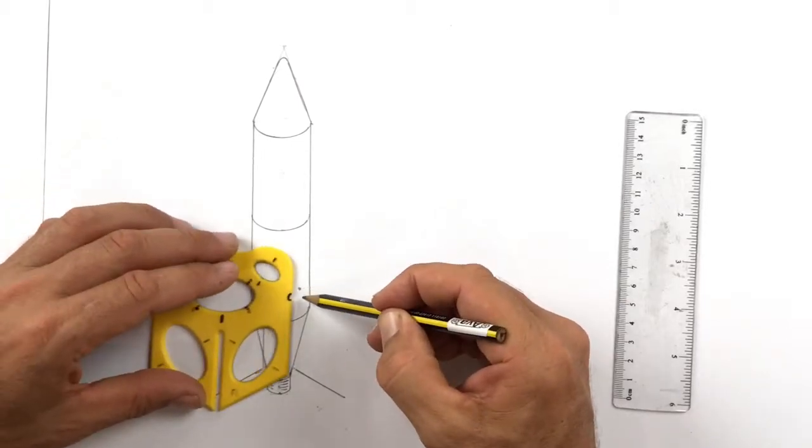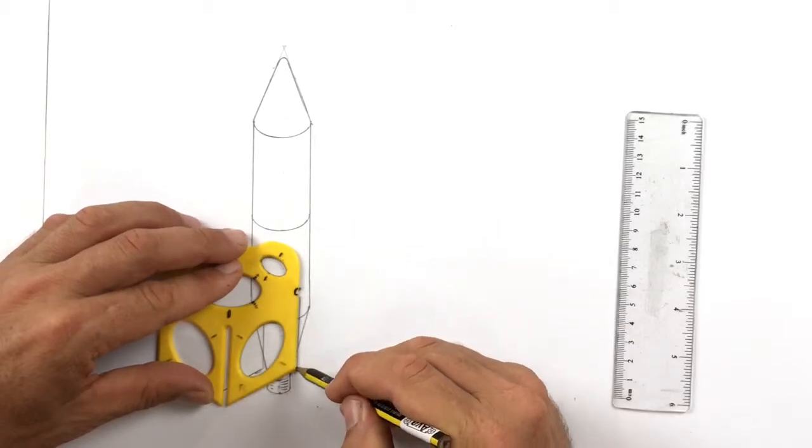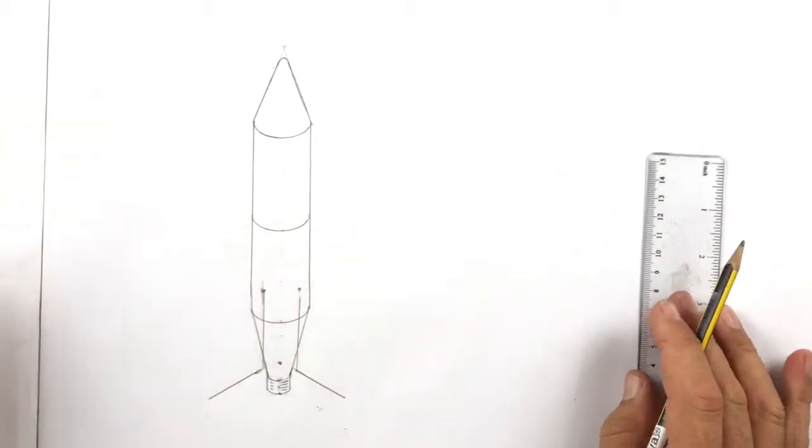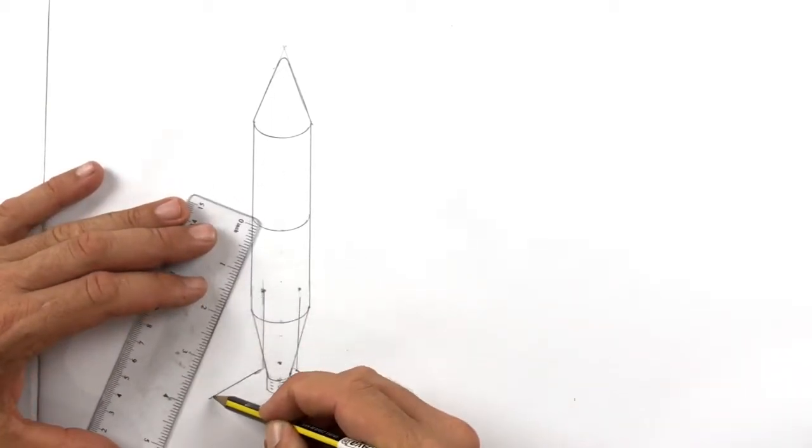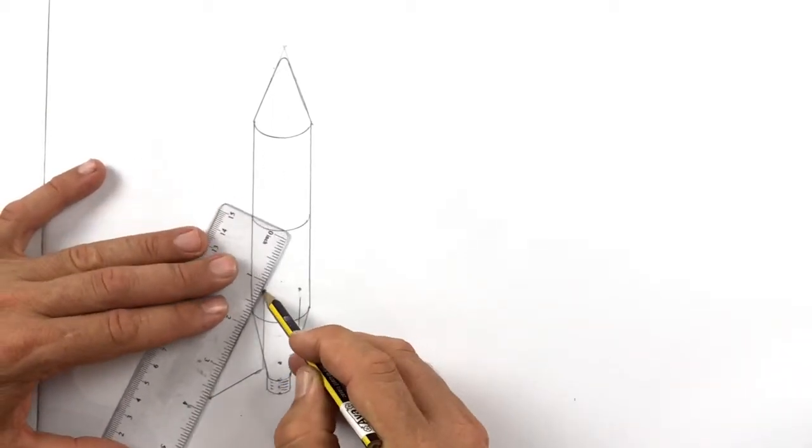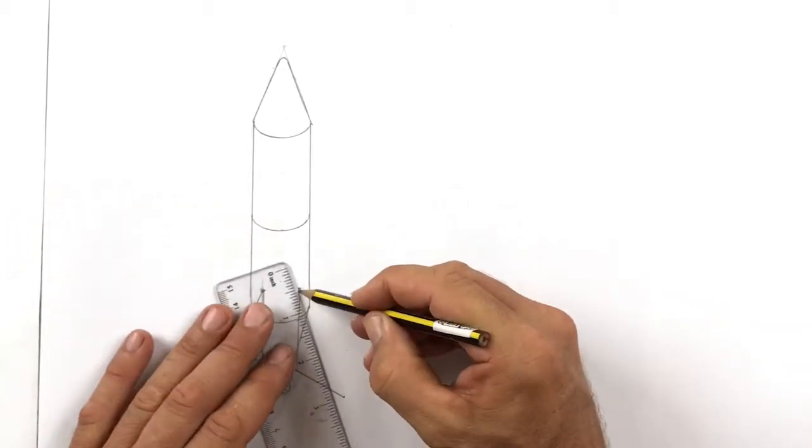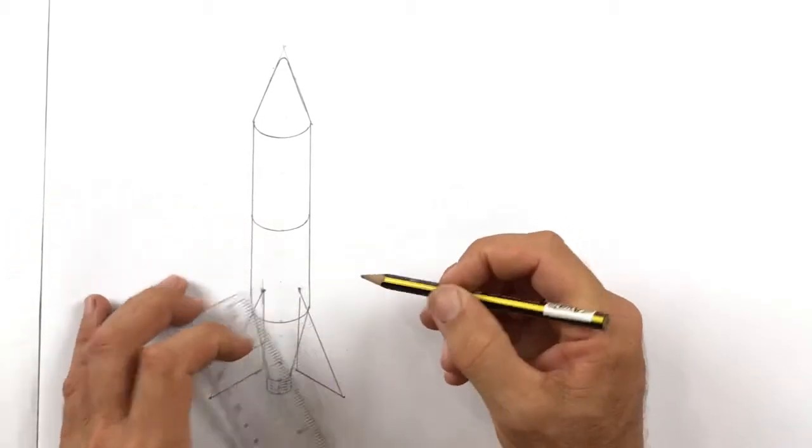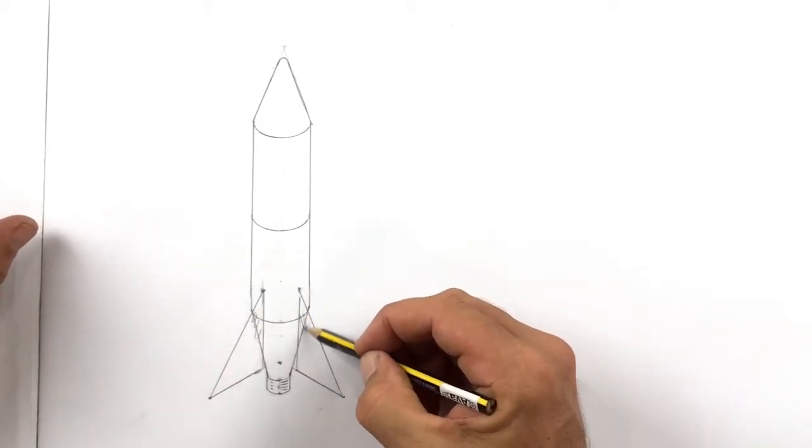Do the same thing on the other side. It's called mirroring when it's exactly the same. So we're going to connect the dots now. There's one dot there to there. Use a rule. Now these fins are covering some of the lines that are going to be hidden. So I'm going to need to erase those lines right there. Boom.